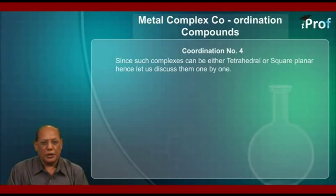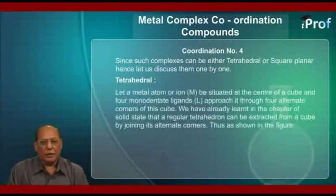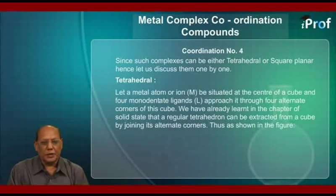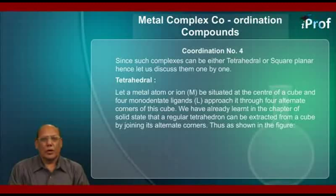First we shall deal with tetrahedral. Let a metal atom or ion M be situated at the center of a cube and four monodentate ligands L approach it through four alternate corners of this cube. We have already learnt in the chapter of solid state that a regular tetrahedron can be extracted from a cube by joining its alternate corners.